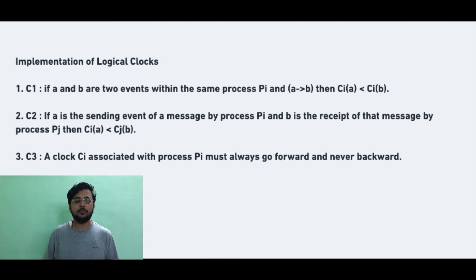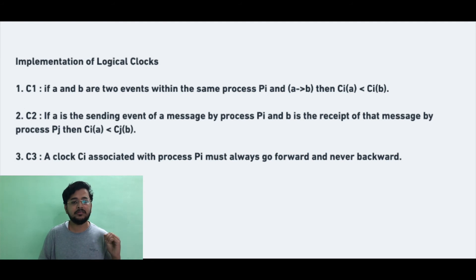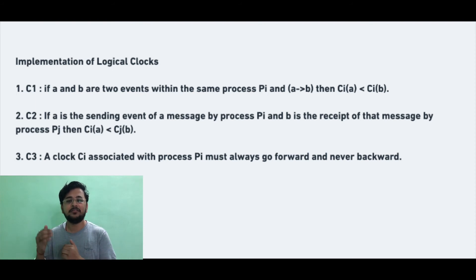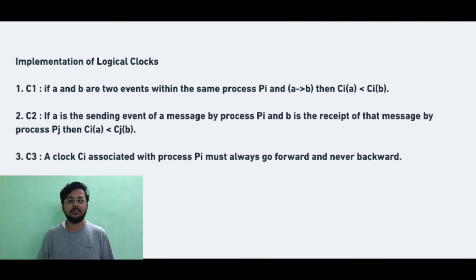Coming back to our example: if in the same process A happened before B, then the clock of A, C(A), also has a time that happened before C(B). Similarly, if there are two processes A and B — A has a clock C and B has a clock D — and A sends an event to B, then C of the sending event happened before D of the same event received. Also, if A and B happen in the same process, C(A) happens before C(B). If A is sending a request to a different process, C(A) is again happened before C(B). And an event's clock value cannot be greater or less than itself — an event can only happen at the time that it happened.